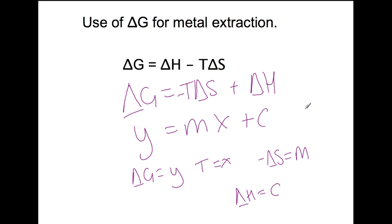Using this information and graphs plotted, we can actually calculate delta G, delta S, delta H or temperature for different reactions. The reason that we can use this as a straight line is because for most reactions, delta H and delta S remain fairly constant whilst we change temperature. Only delta G will then change.